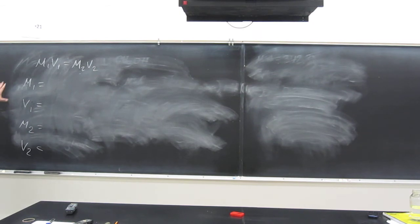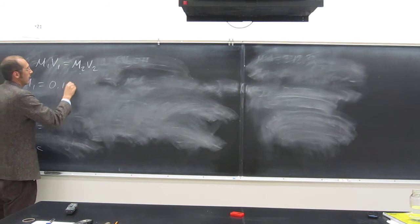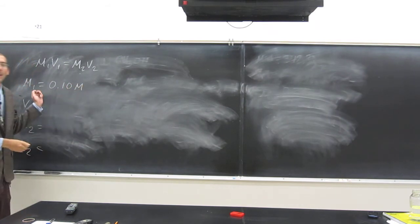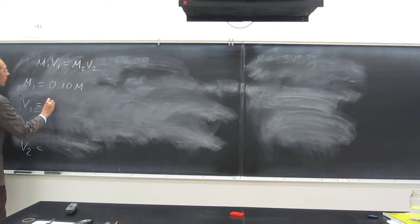So do we know M1? Yeah. What is that? 0.10 molarity is the initial concentration of the solution, right? Do we know the initial volume, V1? Yes, it's 50 milliliters. And remember, we're going to put that decimal point there.